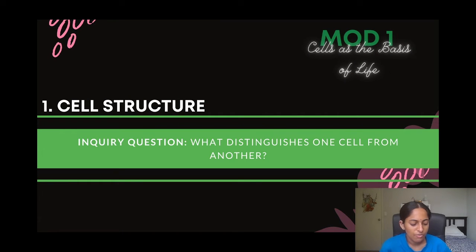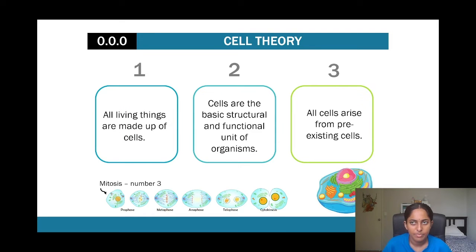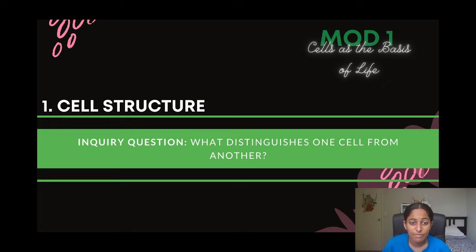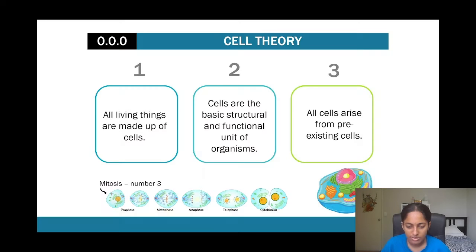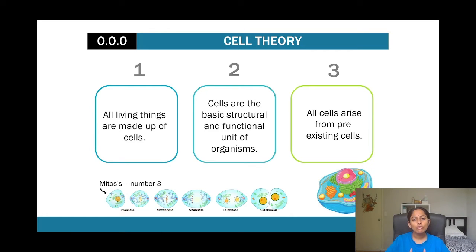Module one starts off with cell structure, which comes under the inquiry question of what distinguishes one cell from another. Cell structure has evolved a lot, but it ultimately comes down to cell theory. Cell theory says that all living things are made up of cells — cells are the basic structural unit for organisms — and all cells come from pre-existing cells, which relates to mitosis and meiosis.